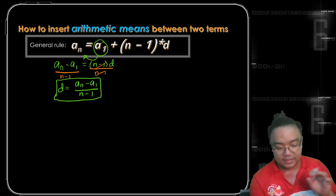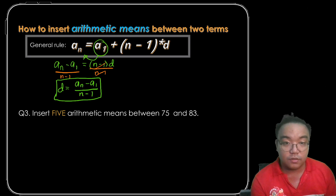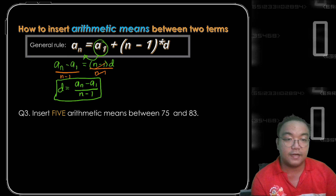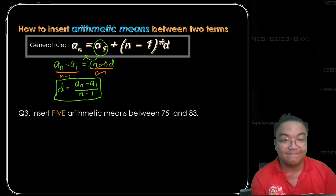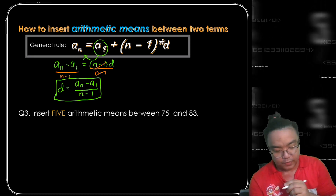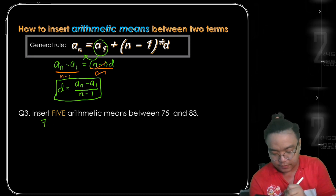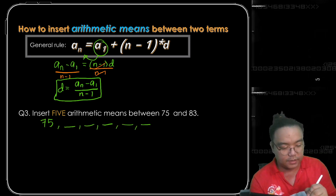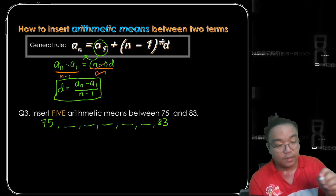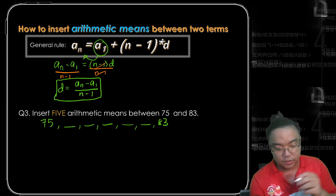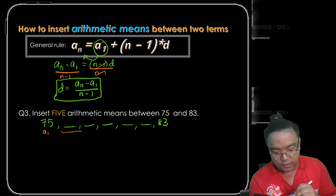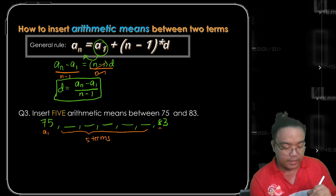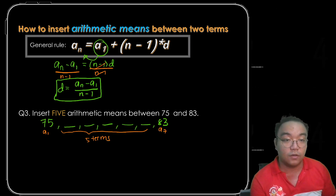Last example — question number 3: insert 5 arithmetic means between 75 and 83. We have 75 as our first term, and since we insert 1, 2, 3, 4, 5 terms to reach 83, we have 7 terms in all. So 75 is a sub 1 and 83 is our a sub 7.